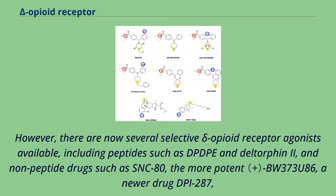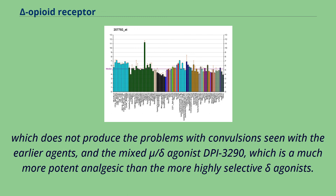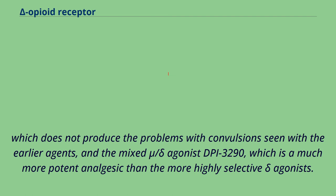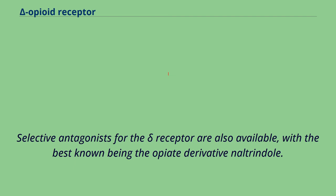373U86, a newer drug DPI-287, which does not produce the problems with convulsions seen with the earlier agents, and the mixed Mu/Delta agonist DPI-3290, which is a much more potent analgesic than the more highly selective Delta agonists. Selective antagonists for the Delta receptor are also available, with the best known being the opiate derivative Naltrindol.